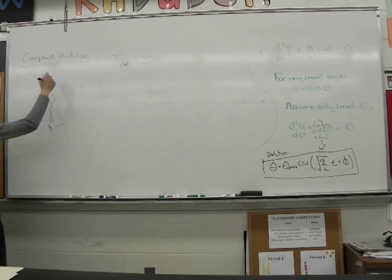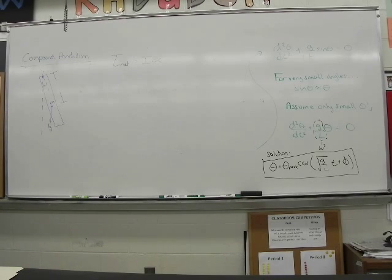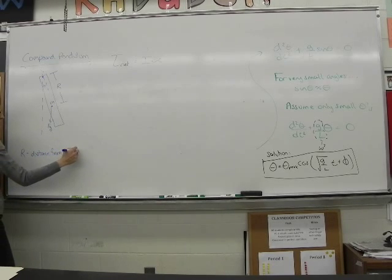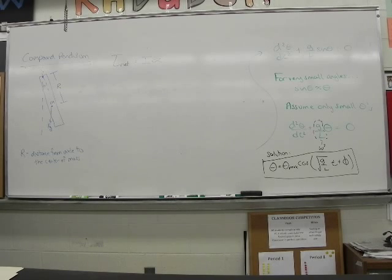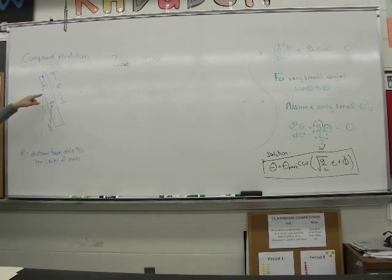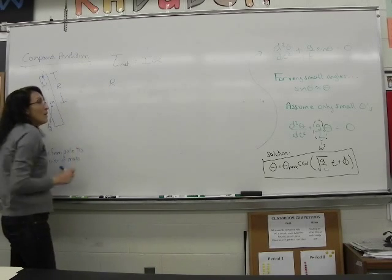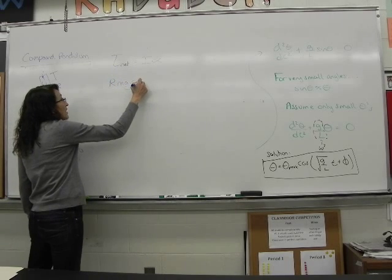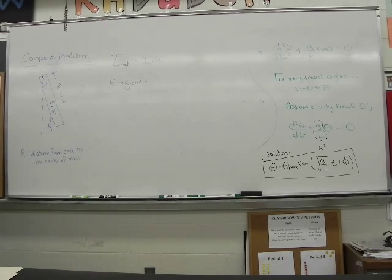Let's put some variables in here. What do we call the distance from the pivot point to the center of mass? We'll call it R. So R is the distance from the axle to the center of mass — whatever point it's rotating around. When we calculate the net torque, what's causing the torque? Gravity. The R from the pivot point is R, the force is Mg, and we're going to have the sine of theta because that's the angle between R and F.